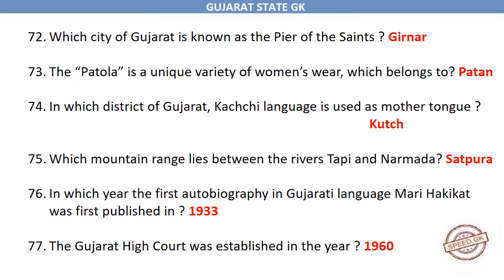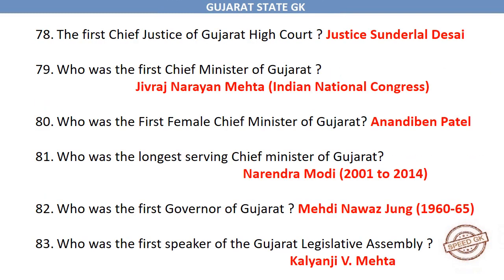Which mountain range lies between the rivers Tapi and Narmada? Satpura. In which year was the first autobiography in Gujarati language, 'Mari Hakikat', first published? 1933. The Gujarat High Court was established in the year 1960. The first Chief Justice of Gujarat High Court was Justice Sunderlal Desai. Who was the first Chief Minister of Gujarat? Jeevraj Narayan Mehta, Indian National Congress.